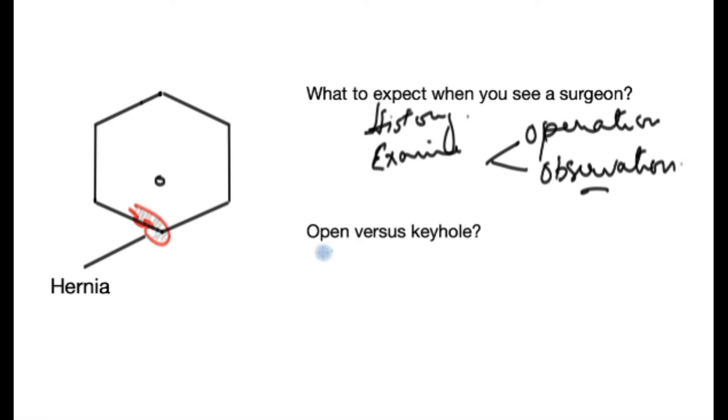As far as operation is concerned, there are two main varieties: the open versus the keyhole. In an open operation, let's assume that this is the belly, this is the rib cage, this is the right side, this is the left side, and this is the crease of the groin, and this is the hernia that you have over here. In an open operation, an incision is made right on top of the hernia, and then you dissect down to the hernia, push it back, and then repair.